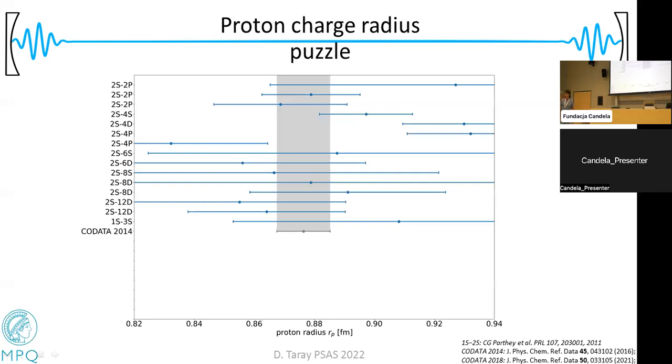Over the years, people measured several different transitions in hydrogen and extracted proton charge radii. These could be averaged together to a roughly consistent value until 2010 or even until 2014. However, in 2010 and further proved in 2013, muonic hydrogen was measured, which is much more sensitive to this finite nuclear size effect due to the higher mass of the muon. You can see there was quite a large discrepancy between the previous average and these muonic values. This became known as the proton radius puzzle.